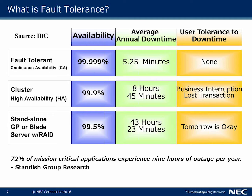When we take a look at cluster high availability, the availability is 99.9%, which equates to 8 hours and 45 minutes of annual downtime. The user tolerance to that is business interruption — it's okay to lose a transaction. But what the NEC FT offers is five nines high availability out of the box, equating to just 5.25 minutes of annual downtime, with zero tolerance for downtime on mission-critical applications.